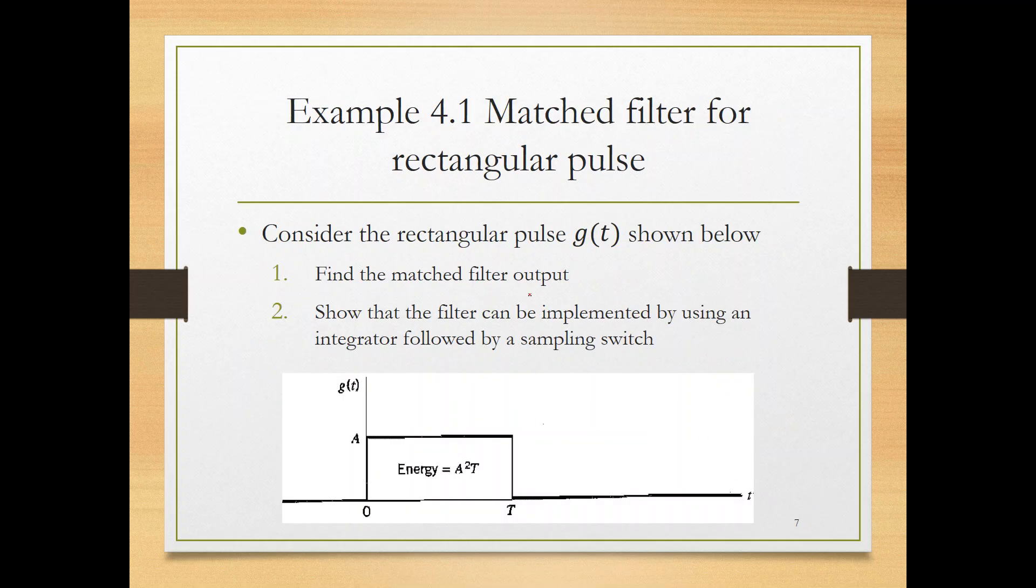So let's understand this concept by simple examples. Example 1. Consider the rectangular pulse G of T shown below. This is the pulse. It has amplitude of A and duration of T. If I tell you find the energy, how do you find the energy? Amplitude squared multiplied by time. Power multiplied by time. So, find the matched filter output of this signal. This is G of T at the transmitter. You want to find the pulse that must be used at the receiver so that you maximize your signal-to-noise ratio.